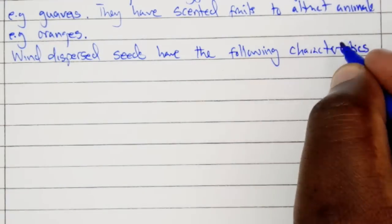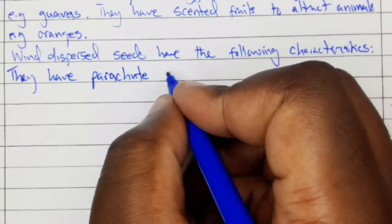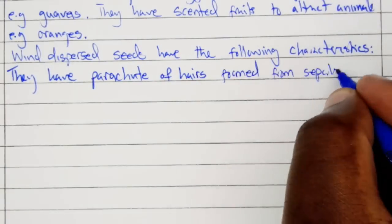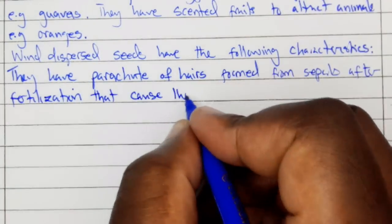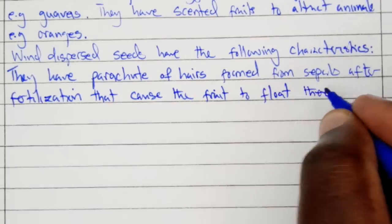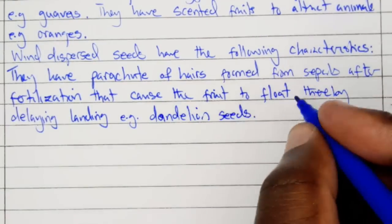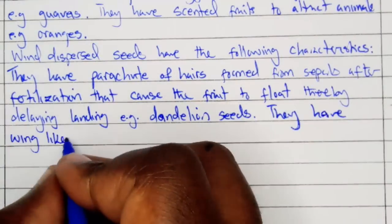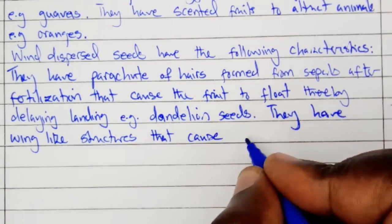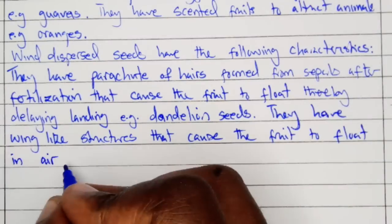Wind dispersed fruits have the following characteristics. They have parachutes of hairs formed from sepals after fertilization that cause the fruits to float, thereby delaying landing, for example, dandelion seeds. They have wing-like structures that cause the fruits to float in air, for example, sycamore seeds.